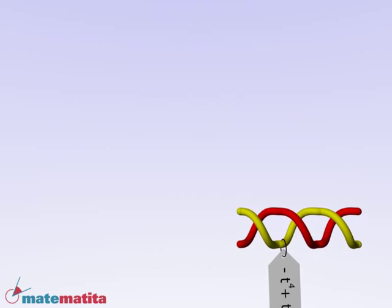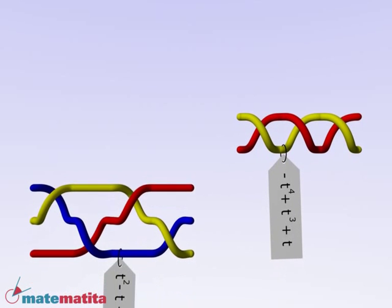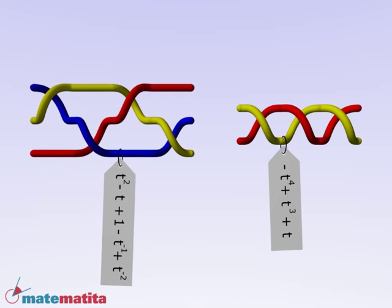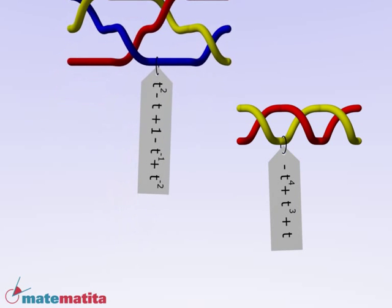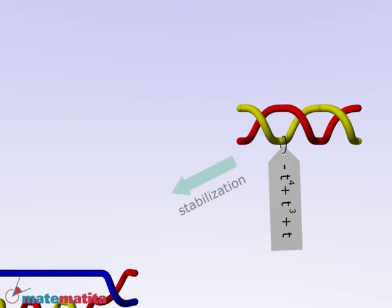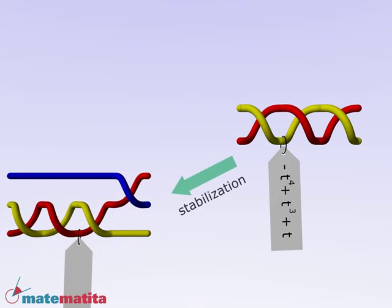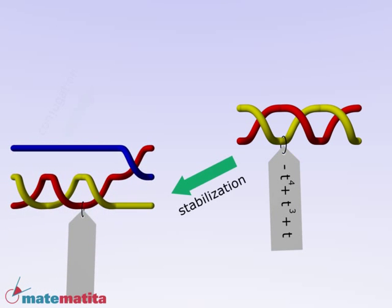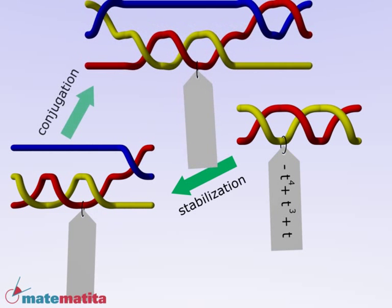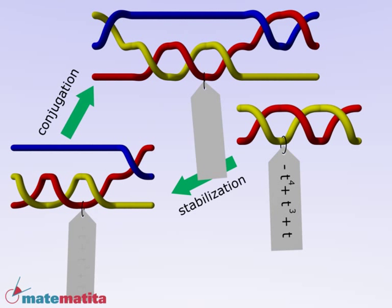Jones found a way to associate a formula, a mathematical expression, to each braid. The powerful fact is that this permits us to distinguish the knots obtained closing the braids. If two braids have different formulas, then they give different knots. On the other hand, if two braids differ by Markov's moves, then they are associated to the same formula.